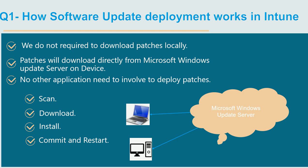In contrast, with SCCM, WSUS downloads updates from the Microsoft Windows Update server, syncs with SCCM, and then you download locally and distribute — a long process. With Intune, that process is eliminated and the Microsoft Windows Update server can push patches directly to your devices.